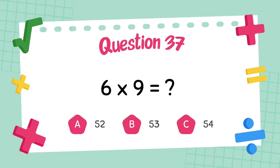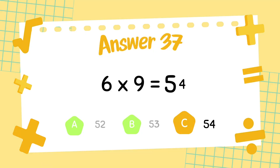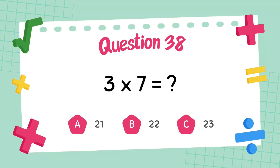What is 6 multiply 9? The answer is 54. What is 3 multiply 7?